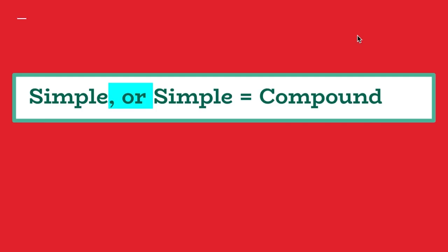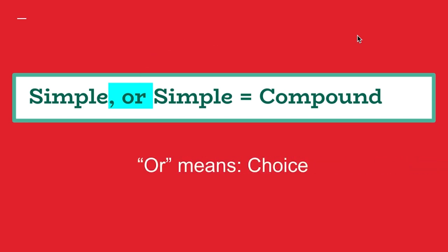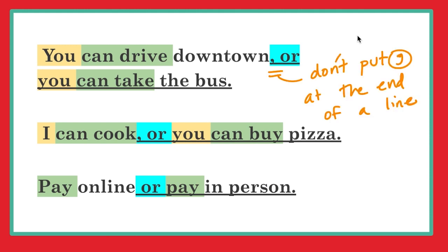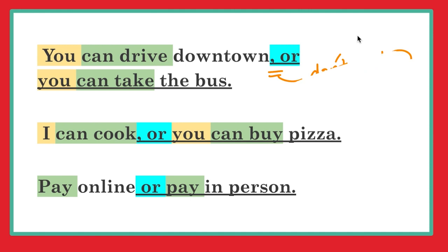What about OR? This is also a compound sentence. The grammar is the same, but the meaning is a little different. OR means a choice — they're not both true. For example: You can drive downtown or you can take the bus. I can cook or you can buy pizza. Pay online or pay in person. Notice the last one does not have a comma, because they are short sentences, very easy: pay online or pay in person.